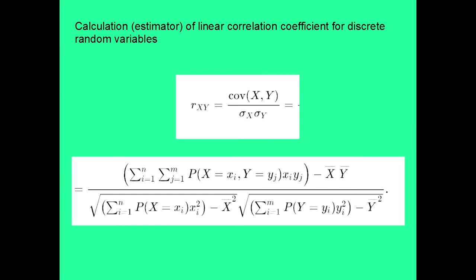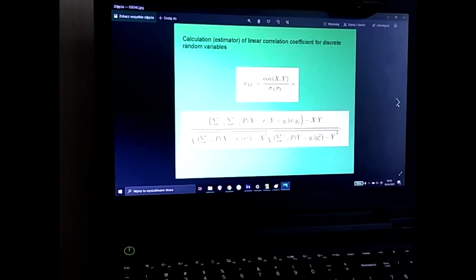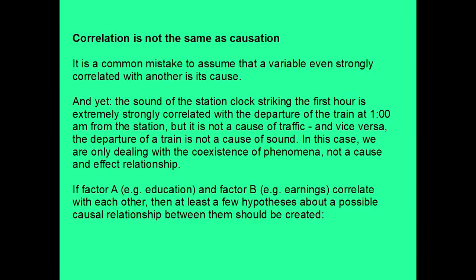Now, calculating the estimator of linear correlation coefficient for discrete random variables is the following. Again, we are dividing covariance by the product of the standard deviations, and it can be expressed in the following form.